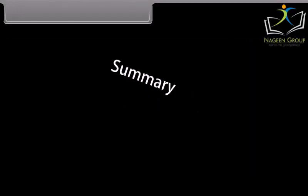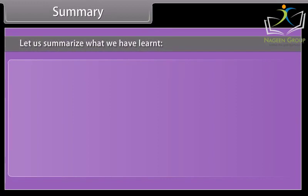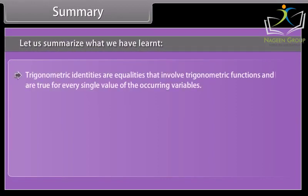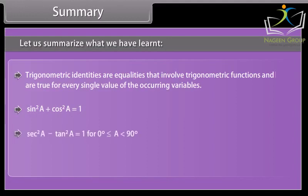Summary: Let us summarize what we have learned. Trigonometric identities are equalities that involve trigonometric functions and are true for every single value of the occurring variables. Sin square a plus cos square a is equal to 1; sec square a minus tan square a is equal to 1, for 0 degree less than or equal to a less than 90 degrees. Cosec square a is equal to 1 plus cot square a, for 0 degree less than a less than or equal to 90 degrees.